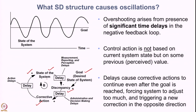The first delay is in understanding the state of the system and how far it is from the goal — called the perception or measurement reporting delay. Once the discrepancy is observed, there can be administrative and decision-making delays before deciding what action to take, and even after deciding, it takes time to execute — indicated as action delay. Any single delay within a negative feedback system will result in oscillatory behavior.